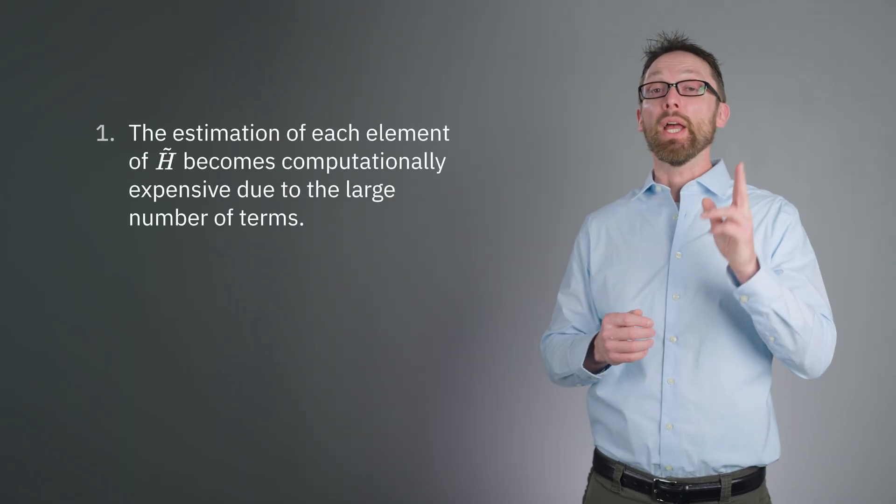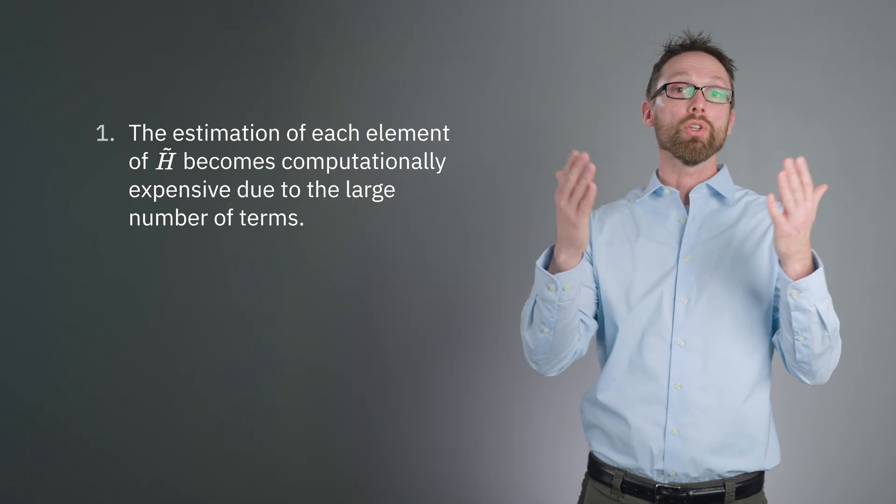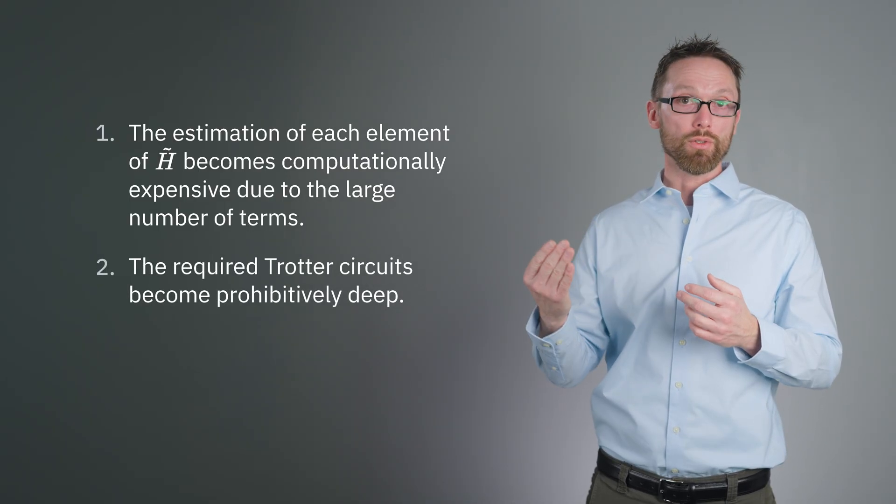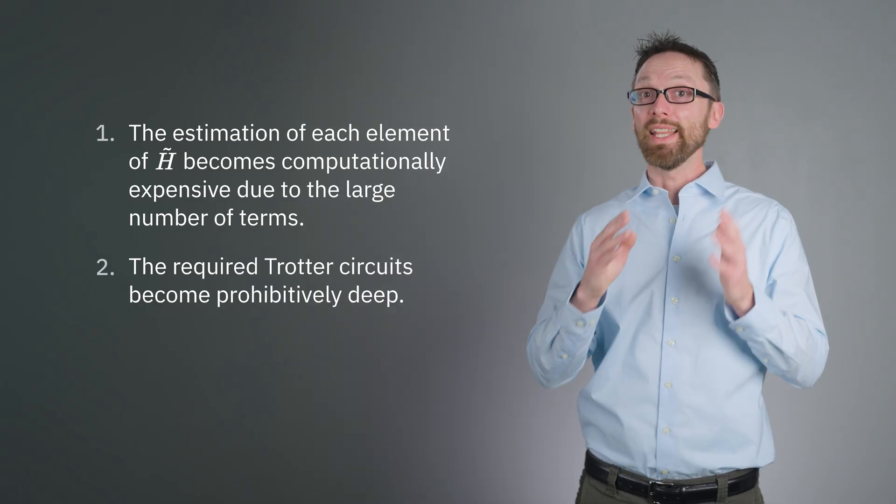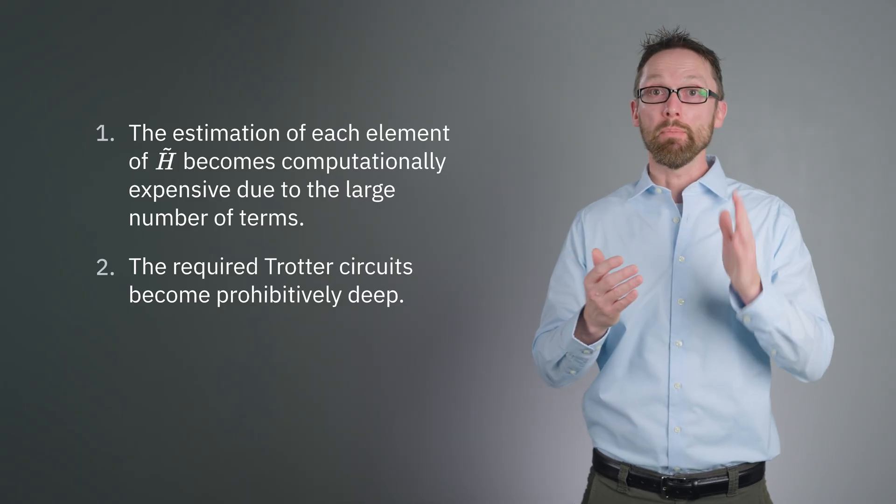We see that quantum Krylov diagonalization may be useful in cases where the number of commuting poly groups in the Hamiltonian is relatively small. This scaling dependency suggests some applications where the Krylov method can be useful and others where it likely will not be. Some Hamiltonians have high complexity when mapped to qubits, involving many non-commuting poly strings that cannot easily be partitioned into a few commuting groups. This is often true of quantum chemistry problems, for example. This complexity presents two primary challenges for near-term quantum computers. First, the estimation of each element of h-tilde becomes computationally expensive due to the large number of terms. Second, the required trotter circuits become prohibitively deep. Both of these points will be less problematic when quantum computers reach fault tolerance, but they must be considered in the near term.